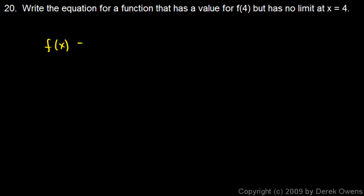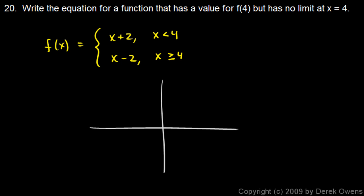Let's write f of x as a piecewise function with the definition changing at x equals 4. We'll have one thing when x is less than 4 and another when x is greater than or equal to 4 — the equality makes it defined at x equals 4. I'll use x plus 2 and x minus 2. So it's x plus 2 when x is less than 4, and x minus 2 when x is greater than or equal to 4. Let's graph that: x plus 2 looks like this up to x equals 4, and x minus 2 starts at x equals 4.